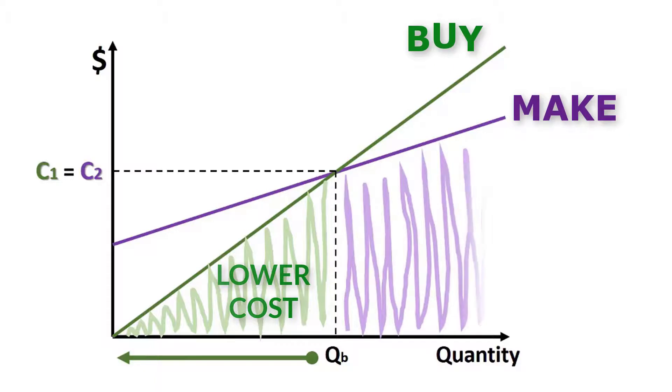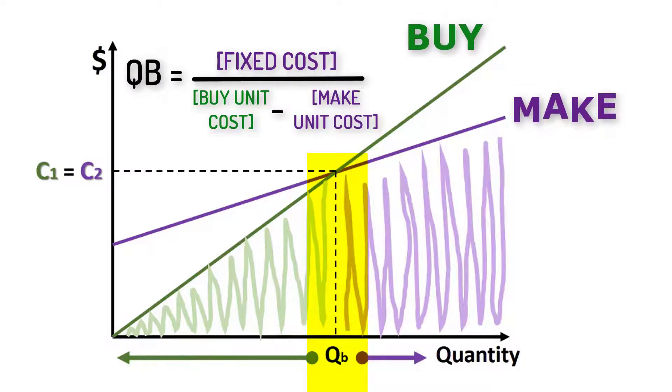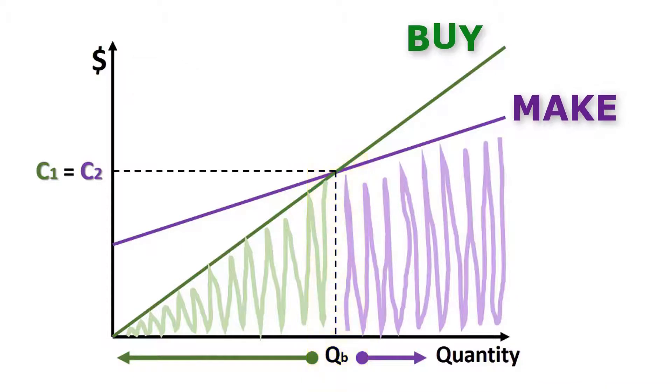Above QB, the purple line, make alternative, has the lower cost. The break-even quantity can be determined by dividing the fixed cost by the difference between buying unit cost minus making unit cost.